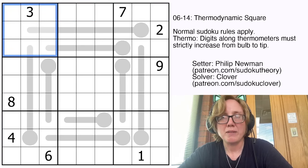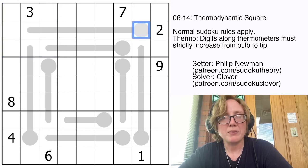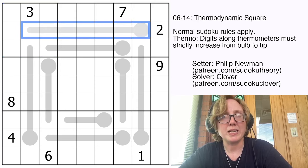Then we also have thermometers. In Sudoku, thermometers tell you that the digits have to increase as we travel along the line, starting at the round bulb end and going towards the other end.